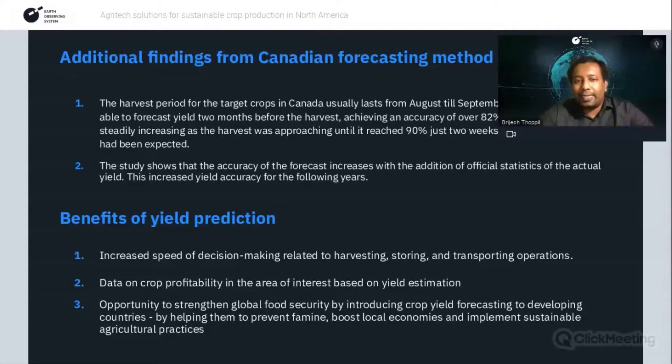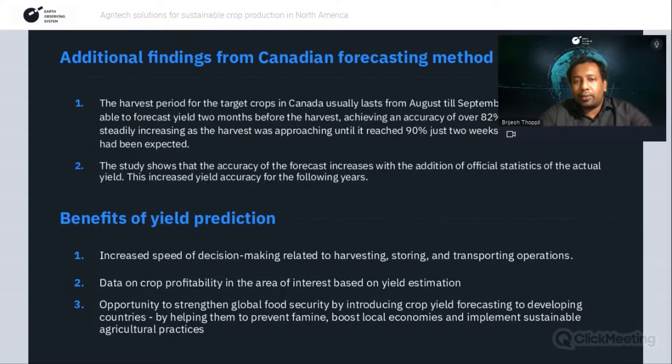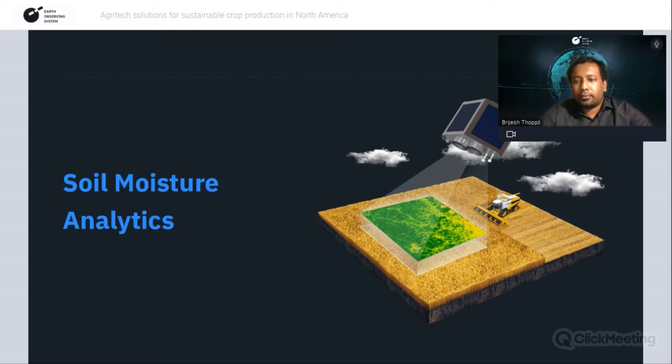Key benefits of yield prediction include: helping decision-making for harvesting operations, storing, and transporting harvested output; giving an indication of crop profitability; and at a larger scale, managing food security by helping agrarian and developing economies prevent drought effects and implement sustainable agricultural practices.